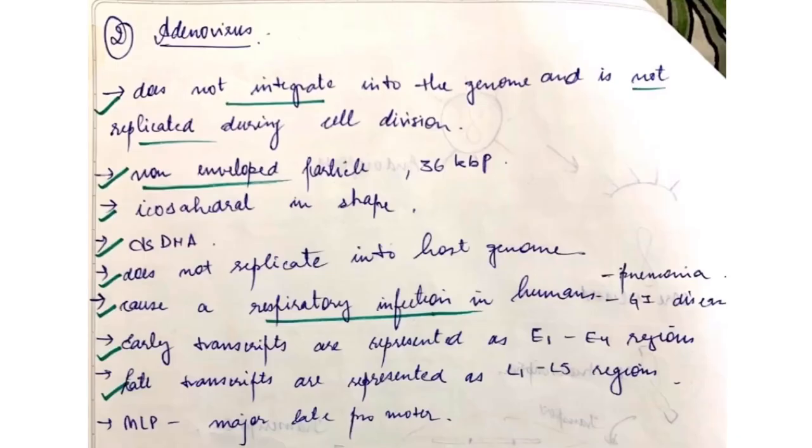This vector does not integrate into the genome like the previous one and it is not enveloped. It is basically an icosahedral, that means it has six sides, it has double-stranded DNA.